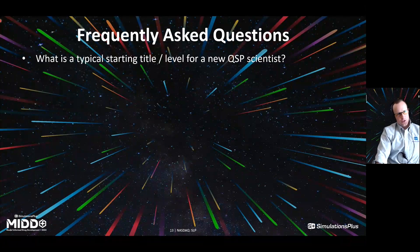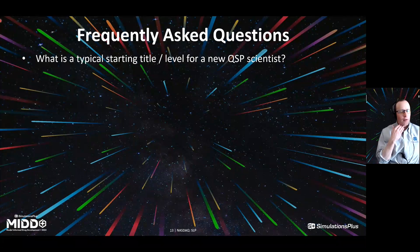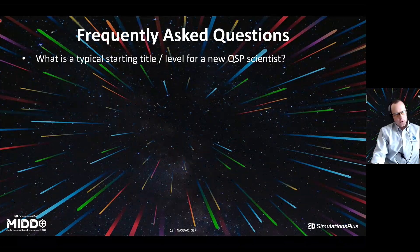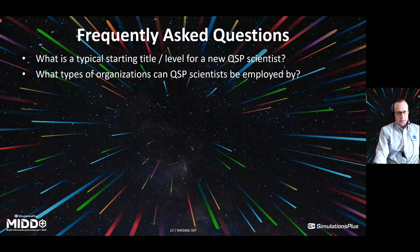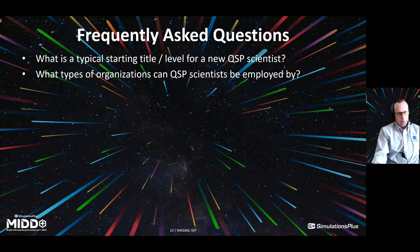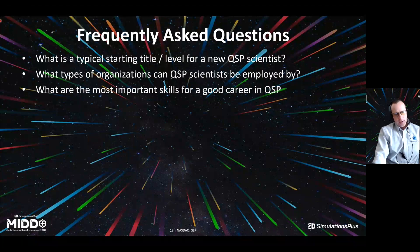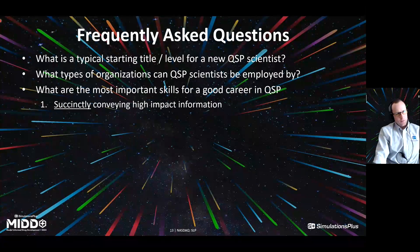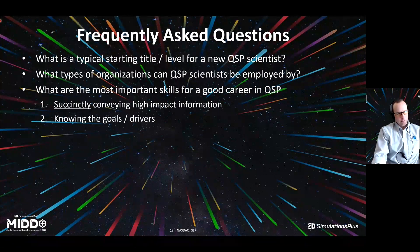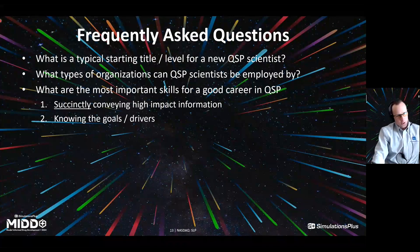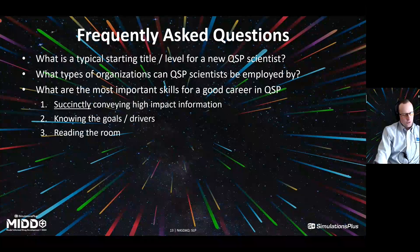A few frequently asked questions: What is the typical starting title or level for a QSP scientist? Typically entry level would be a postdoctoral fellowship, or a Scientist I or II title where you're coming in and starting to do projects within a pharma, biotech, or consulting company right away. What types of organizations can QSP scientists be employed by? Academic institutions, non-profit institutions, pharma and biotech companies, and services and software providers like Simulations Plus. Most important skills in my opinion: number one is the ability to succinctly convey high-impact information — being able to do it succinctly takes practice and requires knowing the goals and drivers for the situations you're in. You could do a really good job, but if that application area doesn't matter to your audience, it doesn't matter as much. Read the room — make sure you understand in each situation what's appropriate, where the emphasis should be.